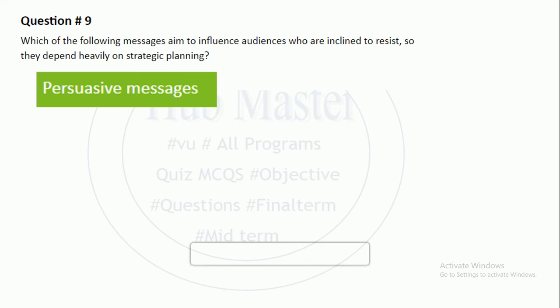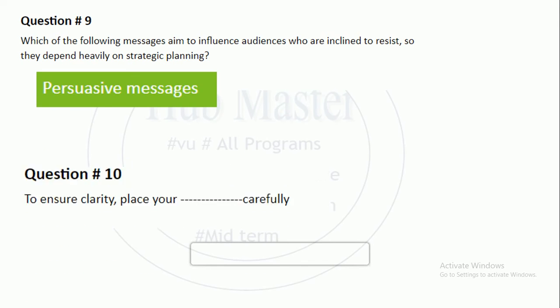Persuasive messages gain people's attention, build interest in others, reduce resistance, and motivate different actions. This is the process of persuasive messages — we use attention and interest to gain these things.